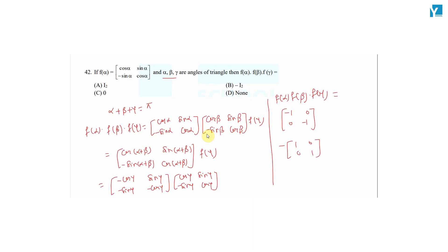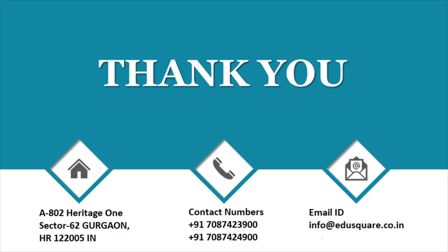So the final result is the matrix [1, 0; 0, 1] multiplied by -1 — wait, it is [-1, 0; 0, -1], which is minus of the identity matrix of order 2, that is -I₂. Therefore f(α) · f(β) · f(γ) = -I₂, and option D is the right answer.